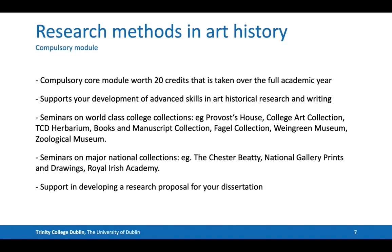The research methods in art history module is one of the compulsory modules. It's worth 20 credits and is taken over the full year. It really supports your development of advanced skills in art historical research and writing. Whether you've been out of education for a number of years, you're returning to education, or you're joining from an undergraduate degree in art history or another subject, we support you in developing your research skills throughout this seminar.